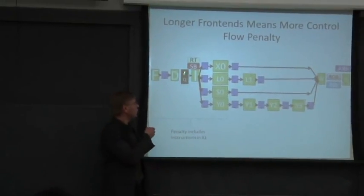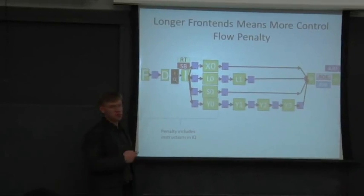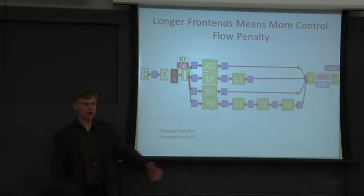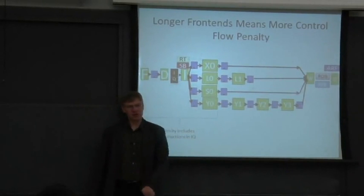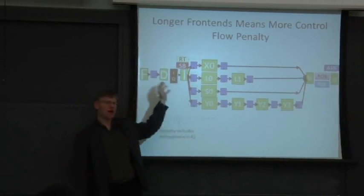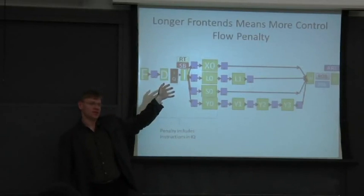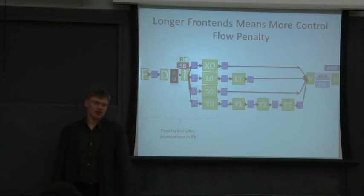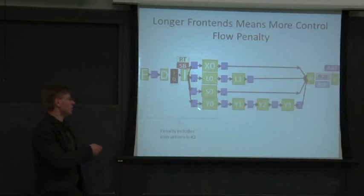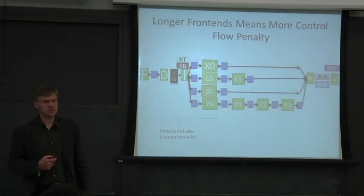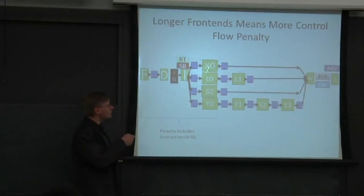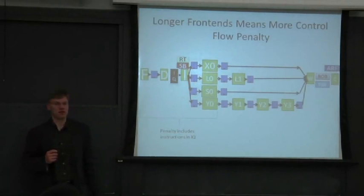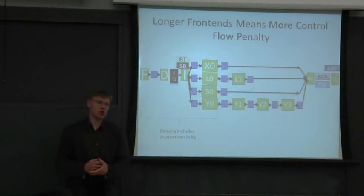We added this issue queue or instruction buffer here — or issue window, depending on what book you read — at the front. Instructions pile up into this. And if you don't figure out whether the branch is taken or not until somewhere in the execute stage, you're going to have more instructions you need to kill when you take a branch mispredict.